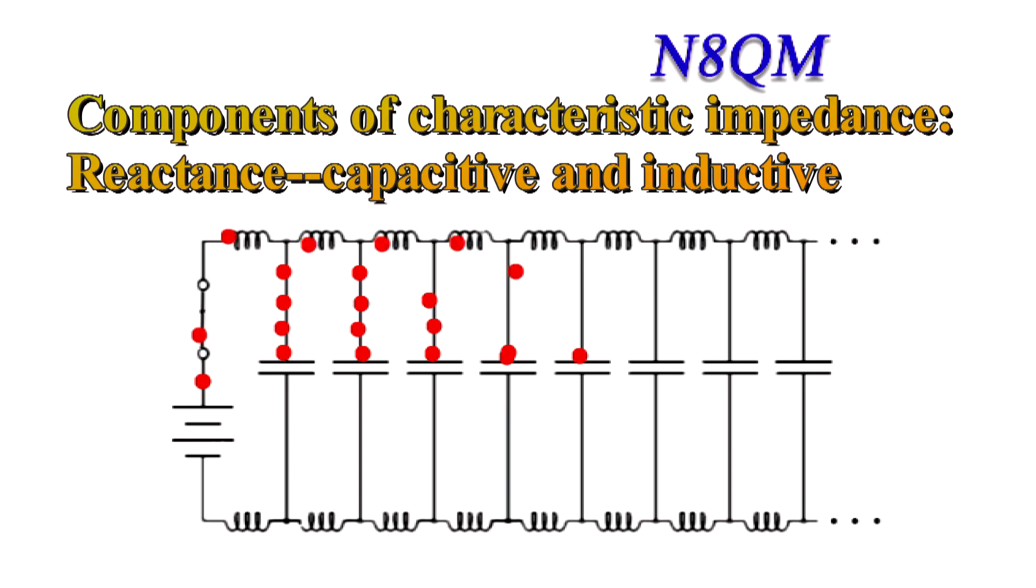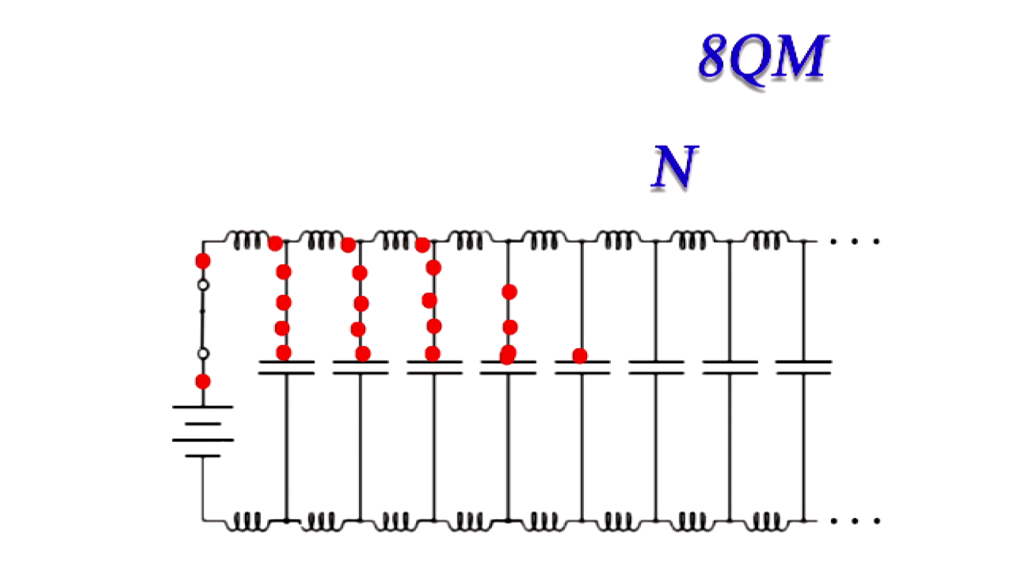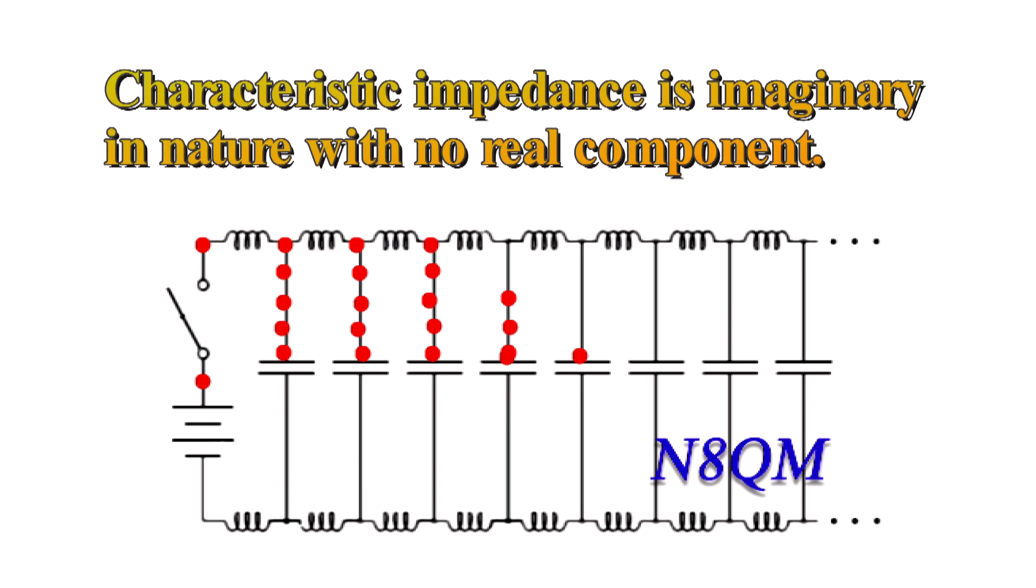Did you notice characteristic impedance is imaginary without a real component other than parasitic?